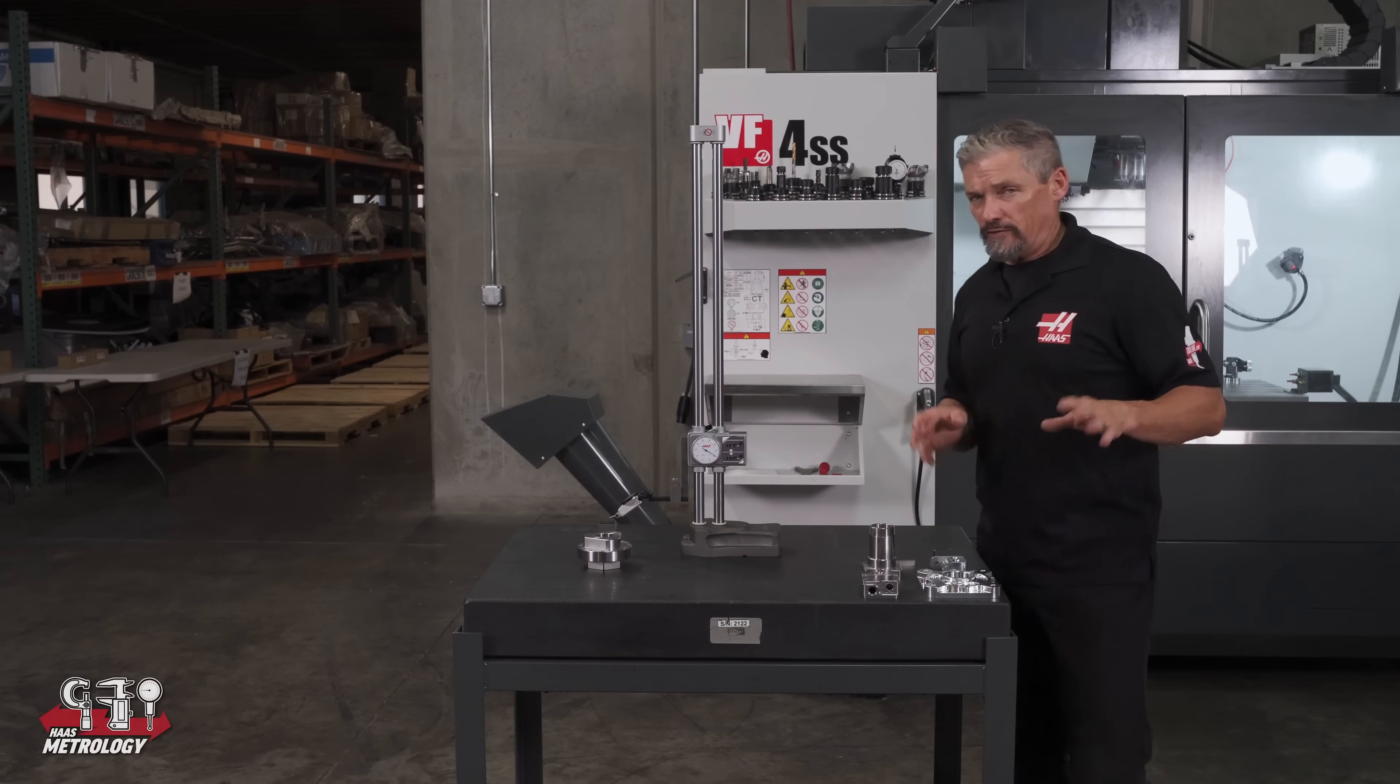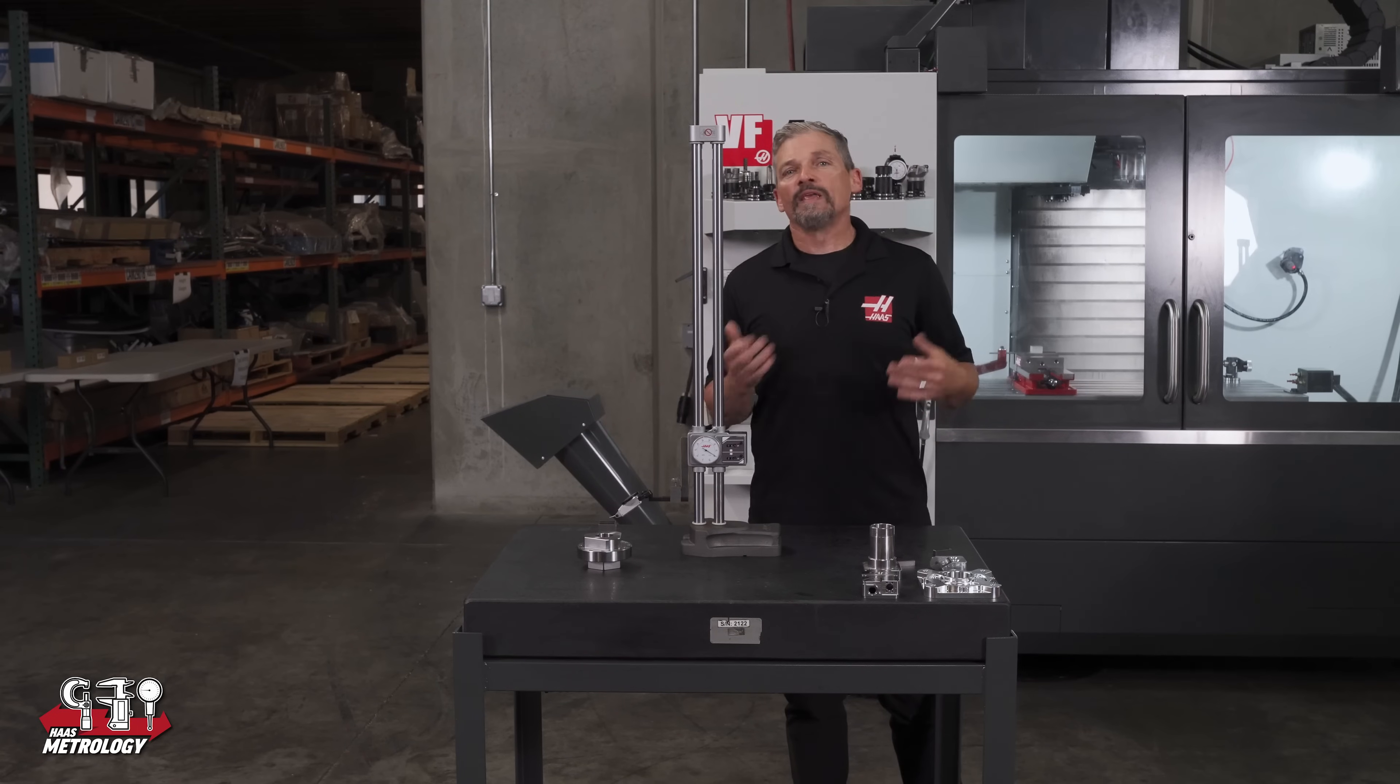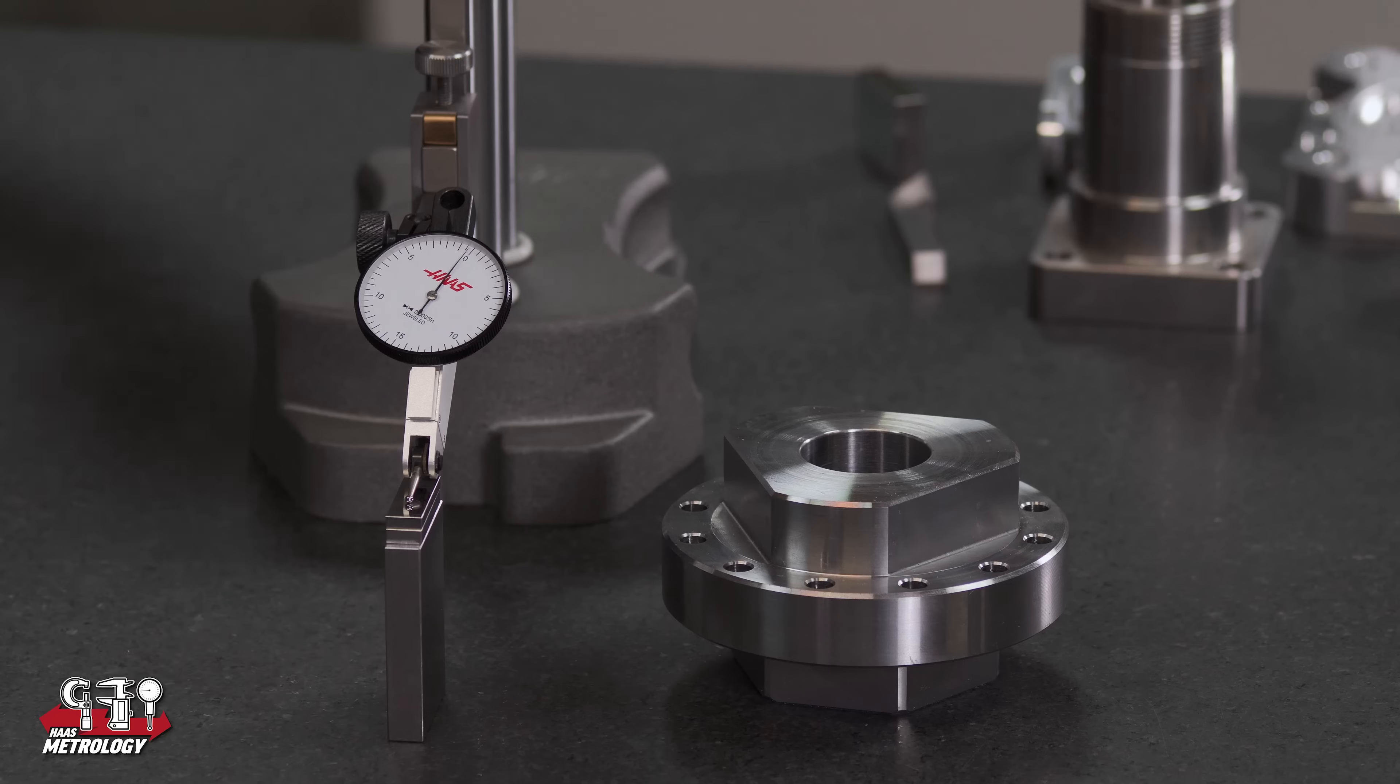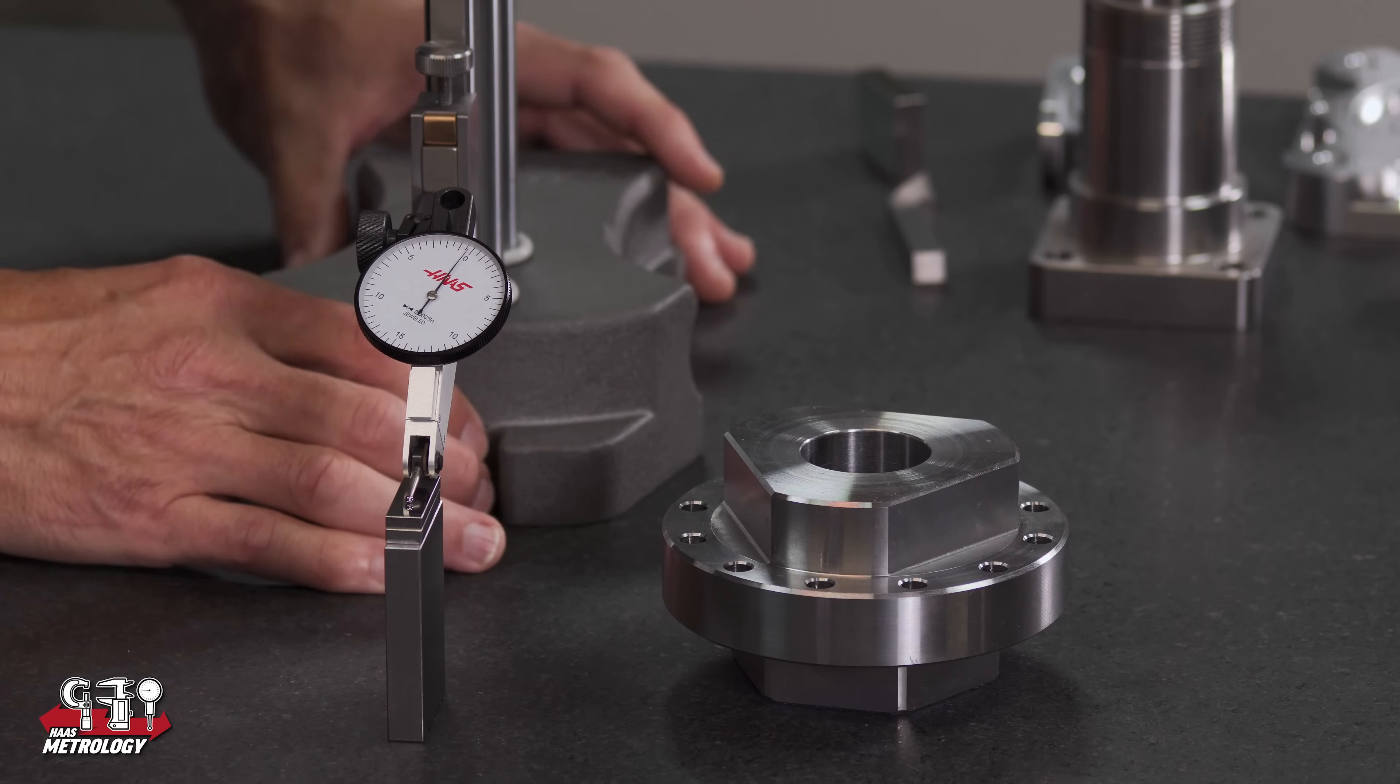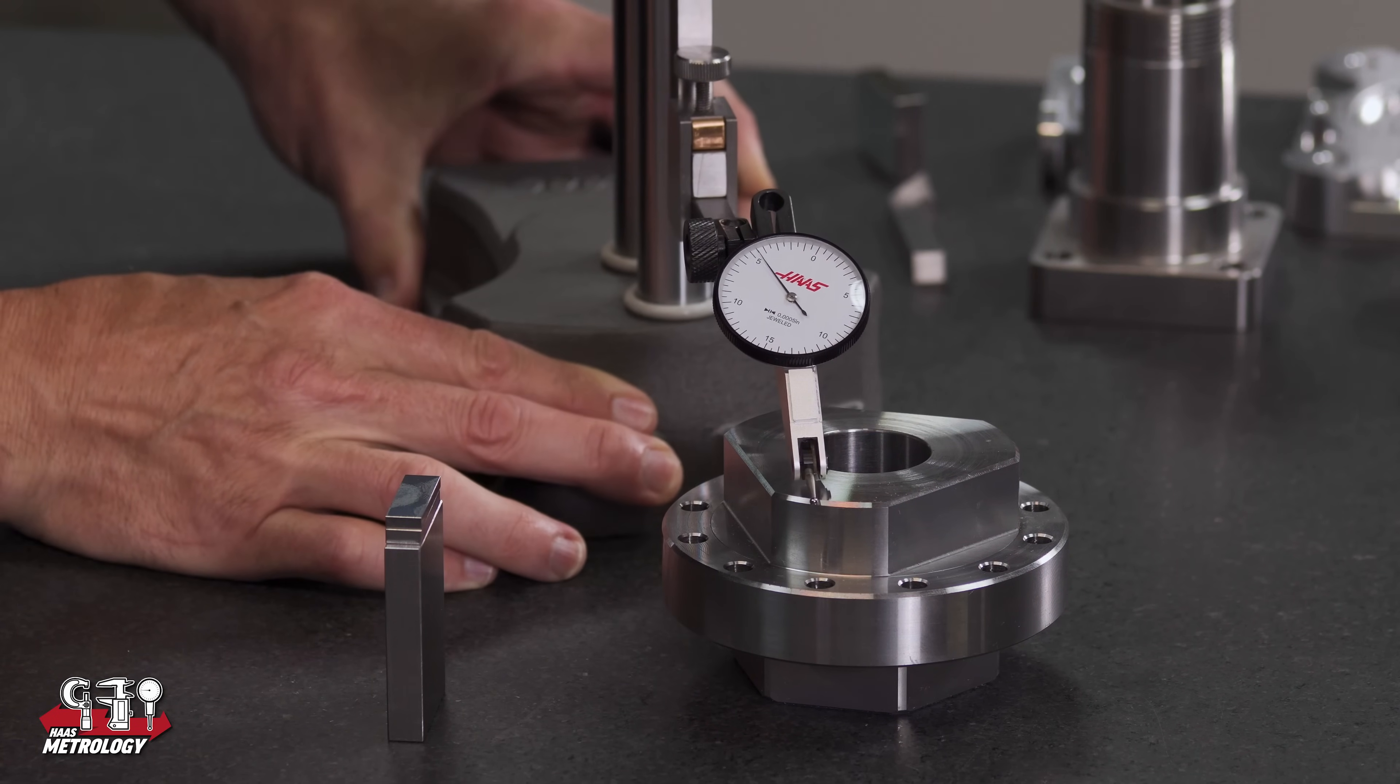Again, if you're looking for really tight measurements, you should use the height gauge as a transfer stand rather than relying on the readouts themselves. Set your gauge blocks or other accurate dimensional references and then transfer that height over to the part you're inspecting.